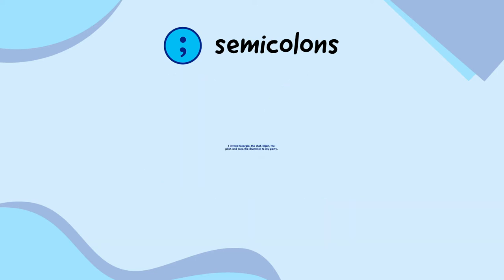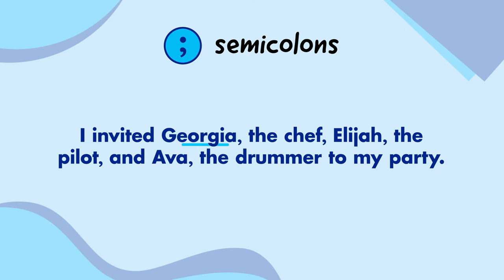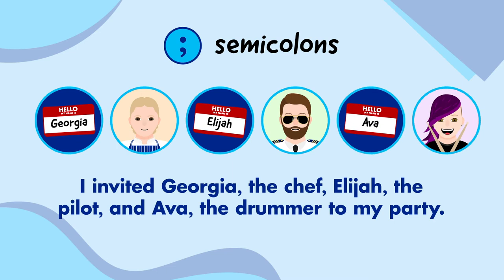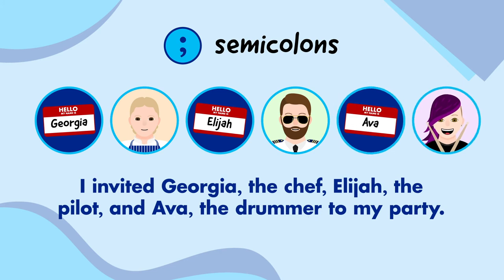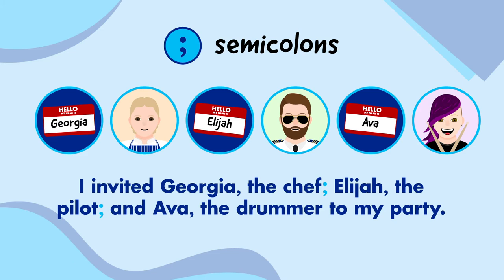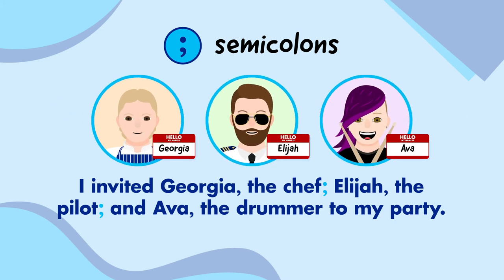Semicolons can also be used in lists instead of commas. 'I invited Georgia, the chef, Elijah, the pilot, and Ava, the drummer, to my party.' At first glance, this list looks like it contains six items. However, not all of those commas are doing the same job. While some commas are separating the items in the list, others are separating the name of the person from their job title. We can make the sentence much easier to understand by replacing the commas separating the list items with semicolons. Now we know the list only contains three items: Georgia, who is a chef; Elijah, who is a pilot; and Ava, who is a drummer.